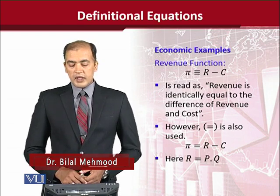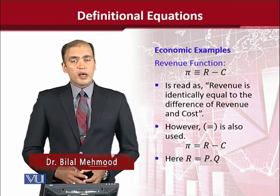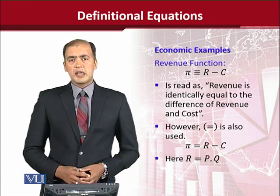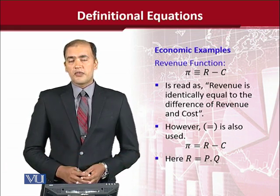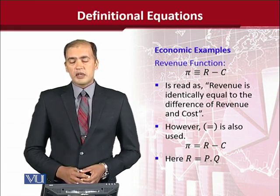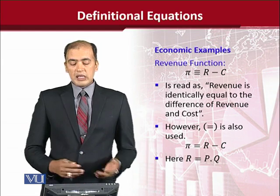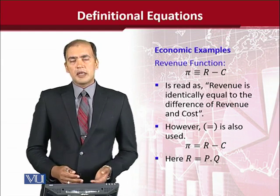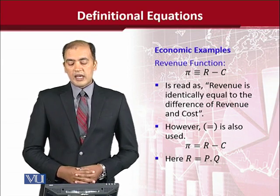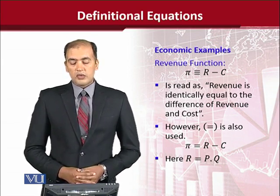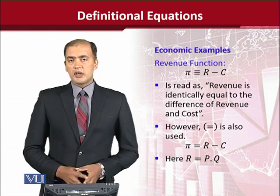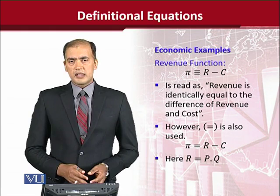Here you can see that an economic example is considered. This is a very well-known identity in economics — the identity of profit. We know that profit is equal to the difference of revenue and cost. And the way we read it is that profit is identically equal to the difference of revenue and cost. So we are not saying 'equal to'; we are saying 'identically equal to.'